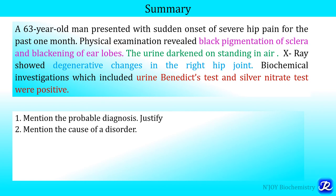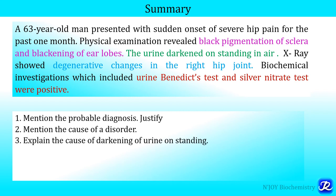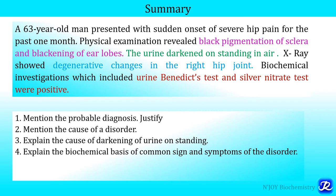The cause of the disorder is deficiency of homogentisic acid oxidase. The cause of darkening of urine on standing: on standing, urine becomes alkaline, the homogentisic acid excreted in urine is auto-oxidized to its benzoquinone acetate form, which polymerizes to a dark color when exposed to air or sunlight. The biochemical basis of black pigmentation of sclera, blackening of ear lobes, and degenerative changes in joints is polymerization of benzoquinone acetate to form alcaptone bodies, which are deposited in connective tissues, bones, and joints.